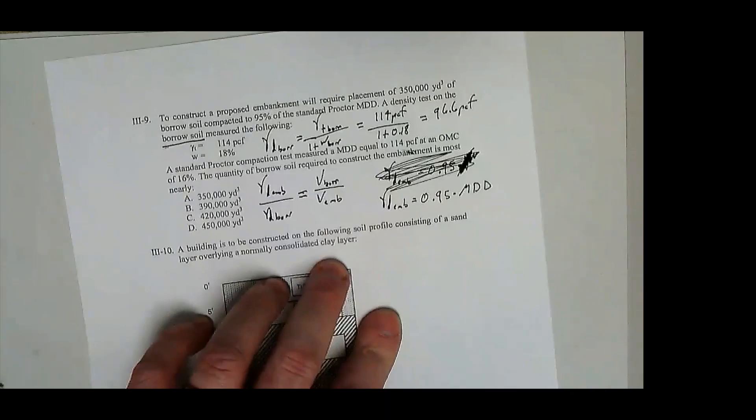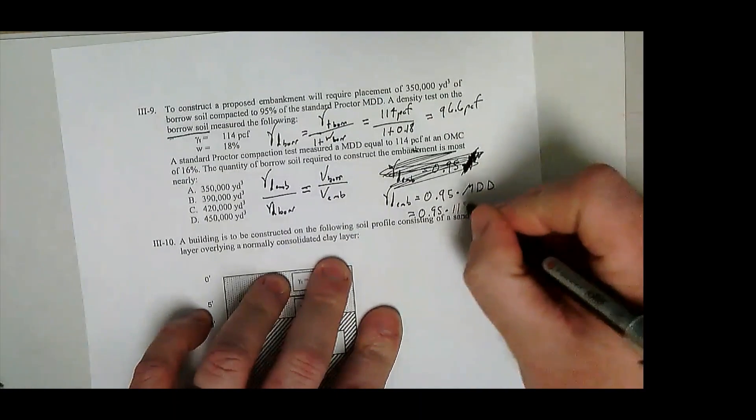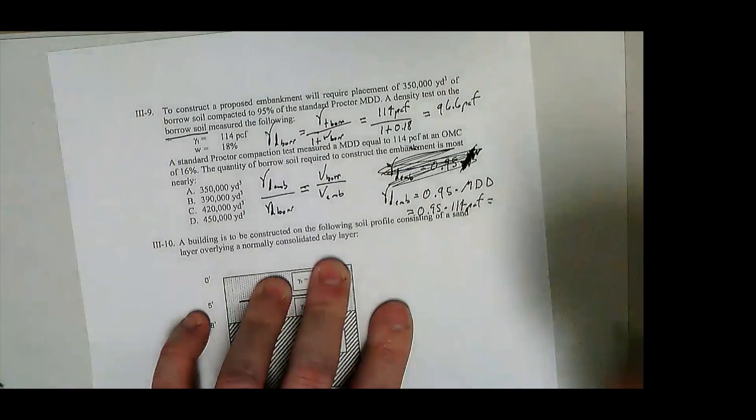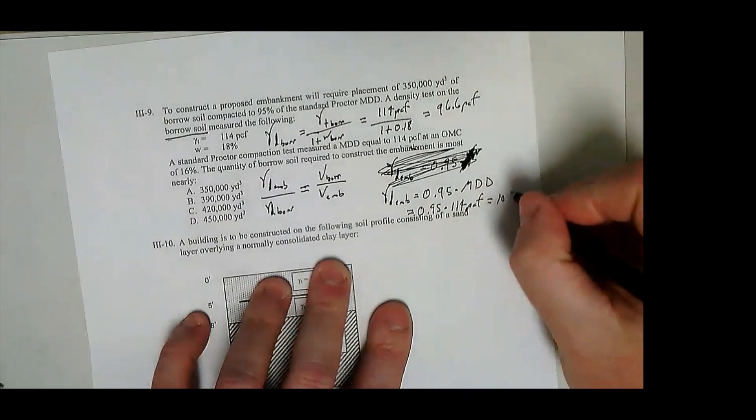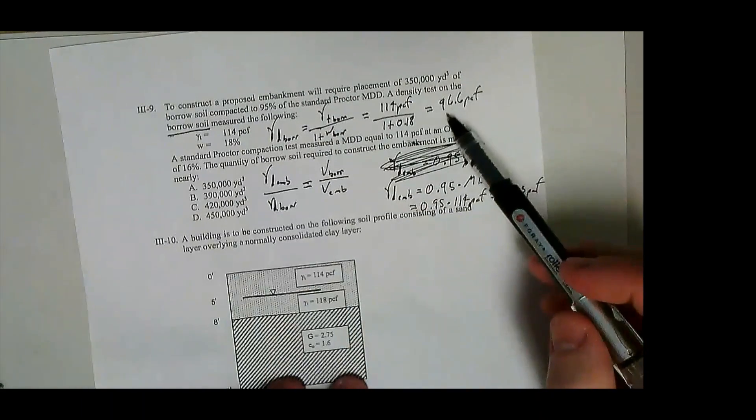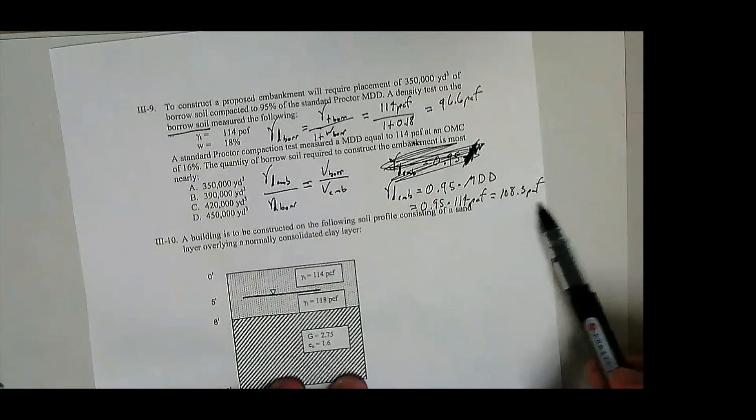And it's 0.95 times 114 PCF. 108.3 PCF. So we're going to dig something up that's 96.6 PCF and we're going to compact it until it's 108.3 PCF.